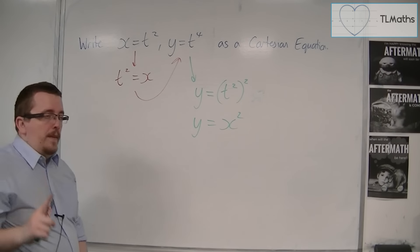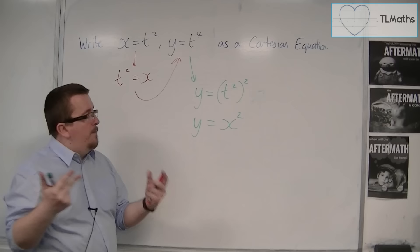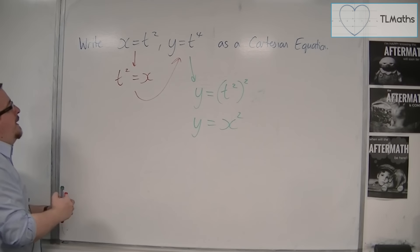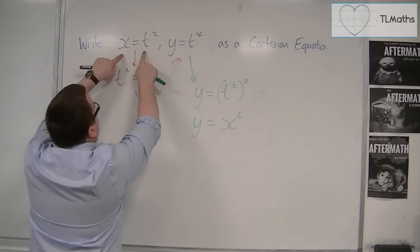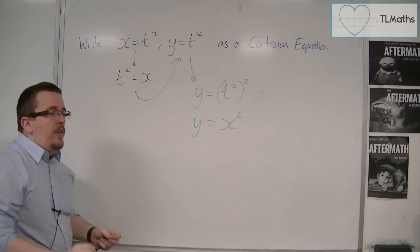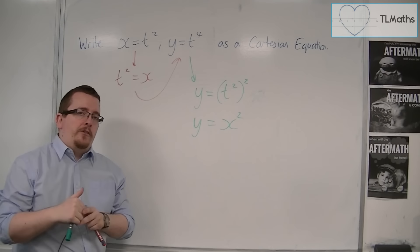However, there is a problem, as you might have guessed from me setting up this example. x equals t squared and y equals t to the 4 isn't quite y is equal to x squared.